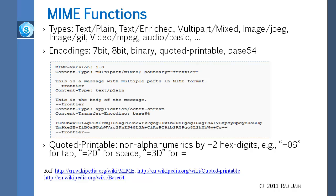A MIME message specifies the MIME version, content type, multi-part mixed, boundary frontier, and then within each part the content type — for example, text/plain. This is the body of the message. If you looked at mail on the wire using a tool like Wireshark, this is what you would find in a normal mail message.